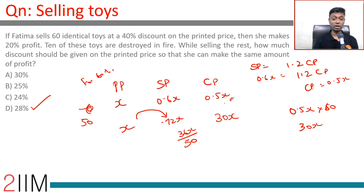However, she is not able to sell everything. She loses 10 of the toys. In the new scenario, she buys 60 but sells only 50, but she wants to see the same profit. She buys 60 with cost price of 30x, she has to make 20% profit, or have a total selling price of 36x.